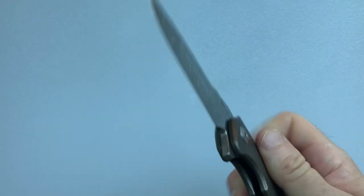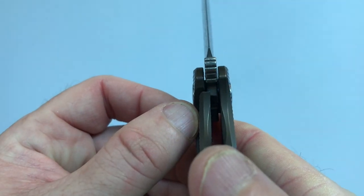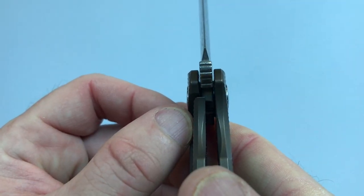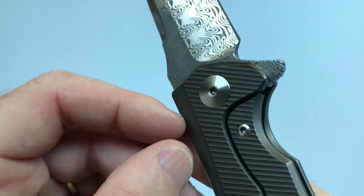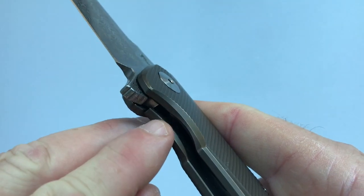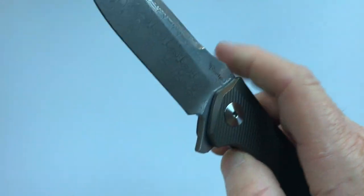The lock on the knife is by frame lock and here you have it. You can see there's about 25% lock up. It also has a lock bar insert and over-travel stop on the lock bar.